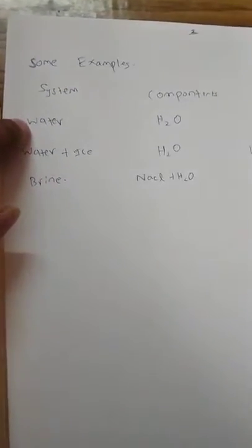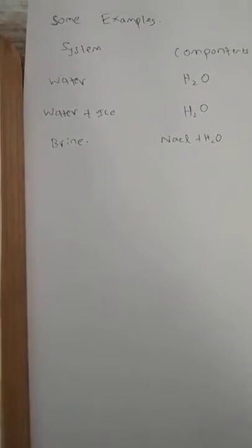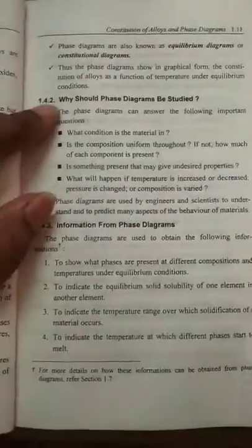Consider water as an example. The components present in water are hydrogen and oxygen, and water exists in the form of a liquid — so the phase is liquid. Next, consider water plus ice: the components are again H2O, but here the phase is a combination of liquid plus solid. Next is brine, which is a solution of water plus sodium chloride. When you mix water with sodium chloride, it becomes a liquid solution where you cannot separate the components.